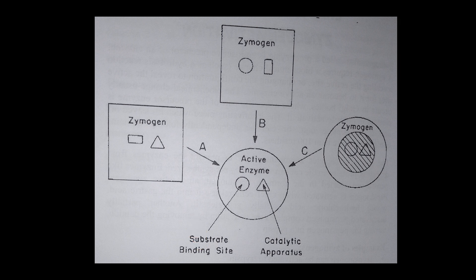If you check that diagram carefully, you will see that the shape of the substrate binding site has been changed. In the zymogen, the substrate binding site is represented as a rectangle, but for it to become active, it is changed from that rectangle to a circle. So that's one mechanism of zymogen activation — the shape of the substrate binding site is changed so that it becomes active. Remember, for an enzyme to catalyze a particular reaction, the substrate must fit into the enzyme's active site.